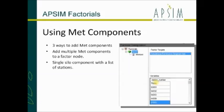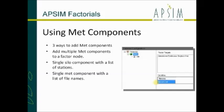A more efficient way is to add a silo input component, and you can see there's a list of station numbers. If you know the station numbers, you can put them in that list - it's much easier and quicker to use in the user interface. Similarly, you can also do that with a list of file names. If you've got all your MET files in a directory, you can list the file names down there, though it can blow out pretty quick with a large list.